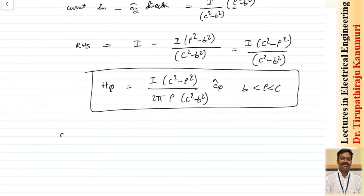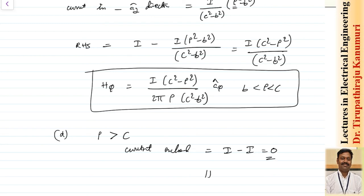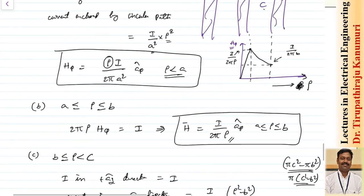Outside the outer conductor, ρ > C: the net enclosed current is I (forward) plus minus I (return) equals zero, so H = 0 for ρ > C. In summary: from 0 to A, H increases linearly (directly proportional to ρ); from A to B it decays slowly as 1/ρ; from B to C it falls steeply and reaches zero at ρ = C; and beyond C it remains zero.